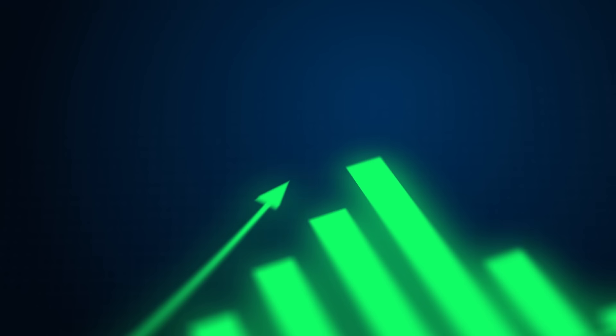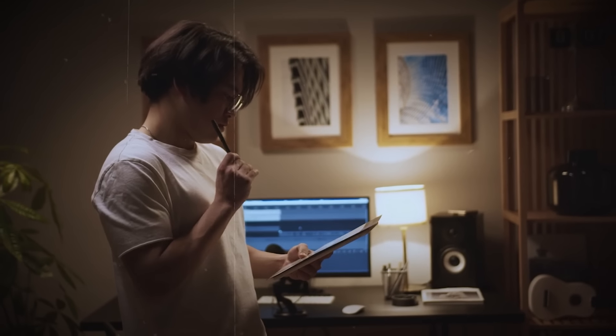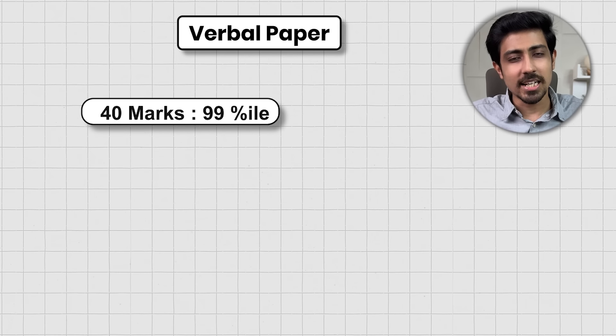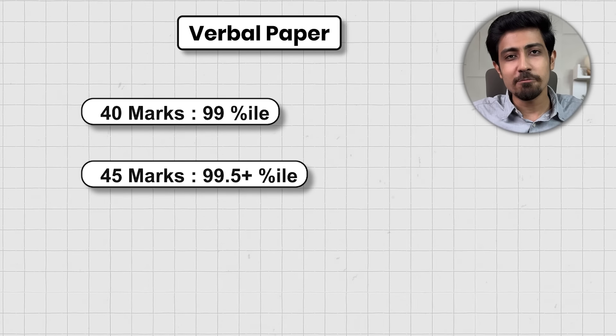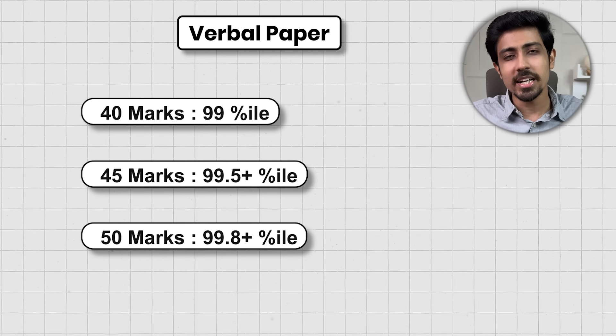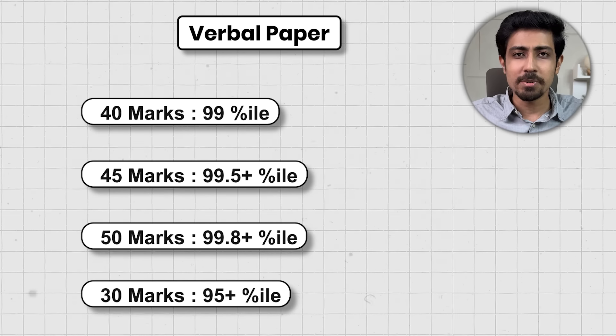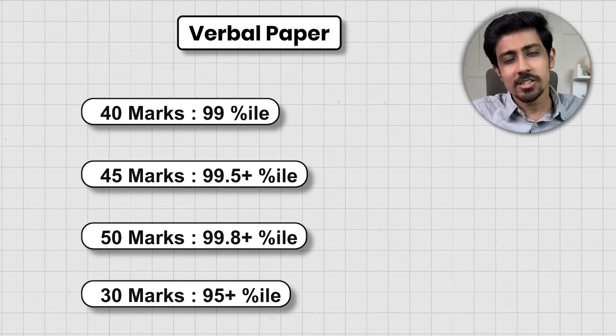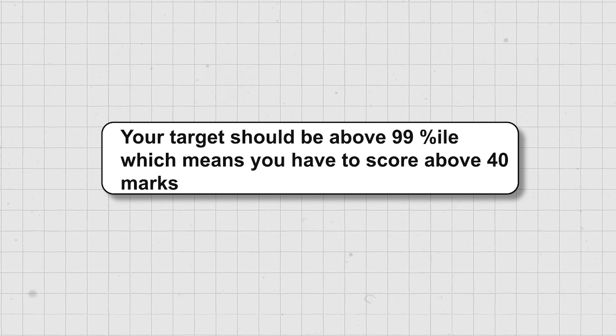CAT exam के verbal section में percentile improve करनी है तो यह video definitely help करेगी। Time आ चुका है कि अब आप targets measure करके आगे move करो। सबसे पहले अपना target समझ लेते हैं - verbal paper पे 40 marks पे around 99 percentile score कर लोगे, 45 marks पे 99.5 plus, और 50 marks पे 99.8 plus। 30 marks से ऊपर लाओगे तो 95 plus आ जाएगा। Usually यही trend देखा गया है, तो आपका target definitely 99 percentile के ऊपर होना चाहिए।